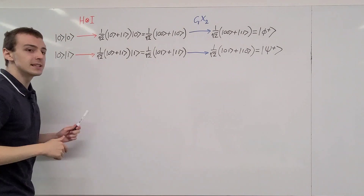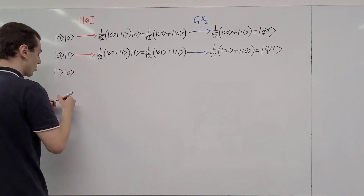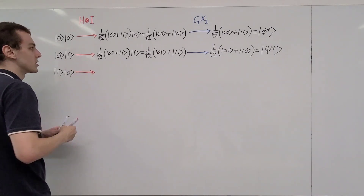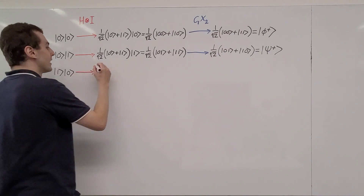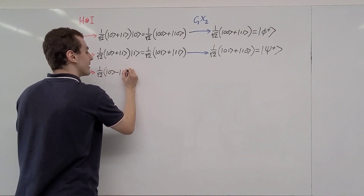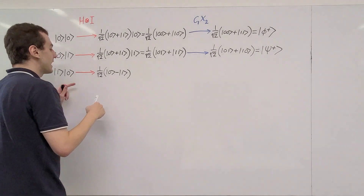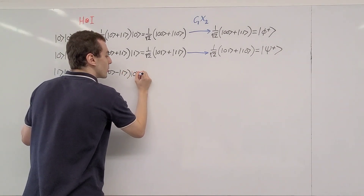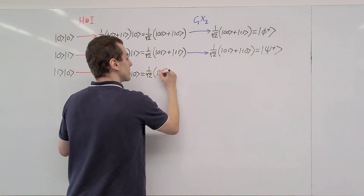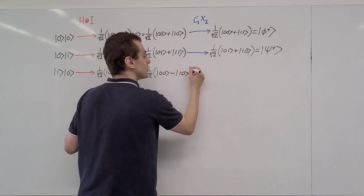Next, let's initialize the two-qubit system in the state |10⟩. The Hadamard gate is going to turn this |1⟩ into 1/√2 times (|0⟩ − |1⟩) — so instead of a plus sign, we have a minus sign. That is what the Hadamard gate does to |1⟩. The second qubit is acted on by the identity, so it remains |0⟩. Performing the tensor product gives us 1/√2 times (|00⟩ − |10⟩).